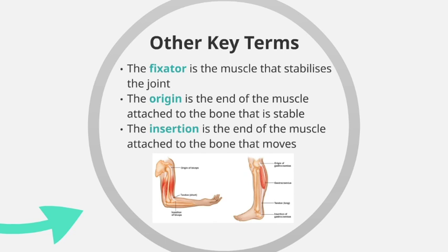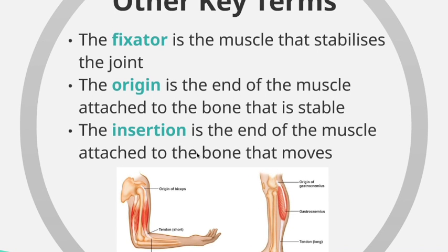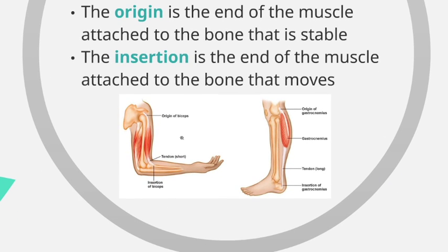We also have the origin and insertion. The origin is the end of the muscle attached to the stable bone. Looking at the diagram, the origin of the biceps is connected to the scapula, which is the more stable bone around the shoulder joint. The insertion of the biceps is connected to the lower arm — the radius and ulna — which are the bones that move. When the biceps contract it's not the scapula that moves but the radius and ulna flexing at the elbow.